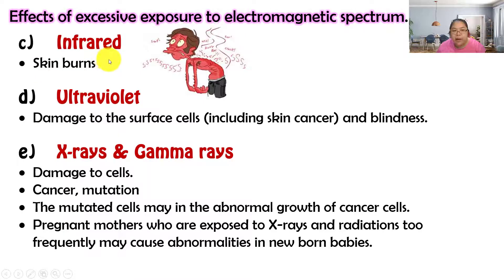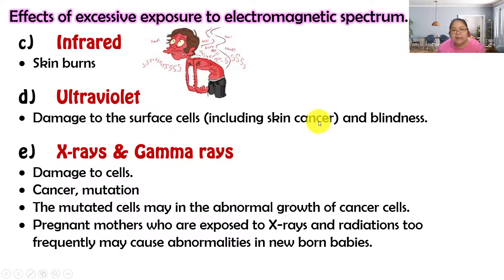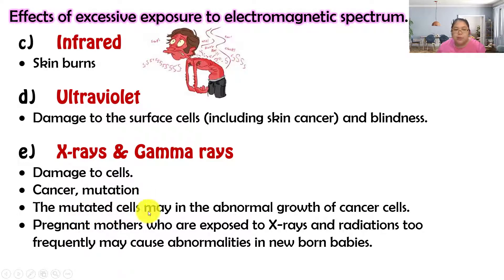For infrared, overexposure can cause skin burns. For UV light, it damages the surface of cells, including causing skin cancer. It starts as a burn, and if more serious, it causes skin cancer and eye damage. For x-rays and gamma rays, the effects are the same: they damage cells, cause cancer, and cause cell mutation — meaning abnormal growth of cancer cells.